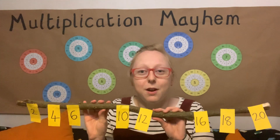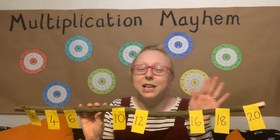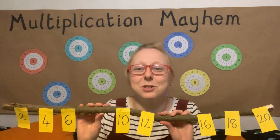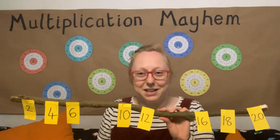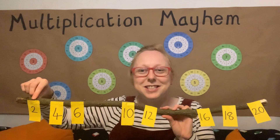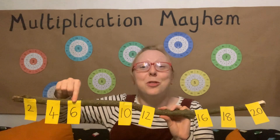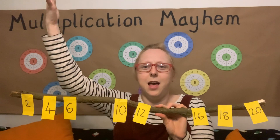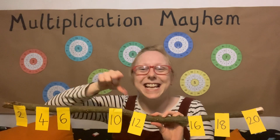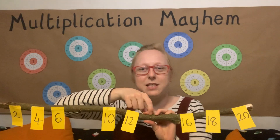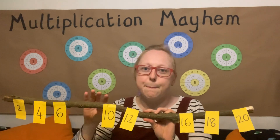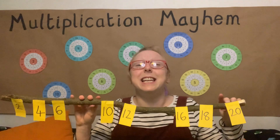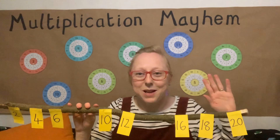Now we're going to say 4 times 2 is 8 in an opera voice. I'm a terrible singer but we're just having fun. So it's opera voice for 4×2 and robot voice for 7×2. 1×2=2, 2×2=4, 3×2=6, 4×2=8 [opera], 5×2=10, 6×2=12, 7×2=14 — beep boop — 8×2=16, 9×2=18, and 10×2=20.